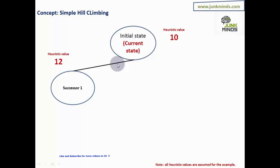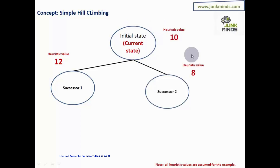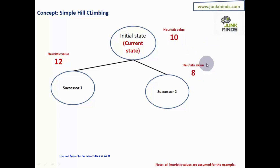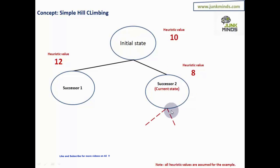I then apply another rule and get another successor. When comparing successors, I'm comparing their heuristic values. If I find that this new successor is better than the current state, I make that successor the current state and continue evaluating further from there.